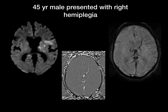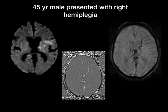A 45 year old male presents with right hemiplegia. Here it is obvious that there is a diffusion restriction in the left MCA territory, in the left capsular region and frontal lobe. These are the magnitude and phase images of susceptibility weighted imaging. Prominent veins are seen along with and even outside the area of restriction, as also depicted in the phase images.